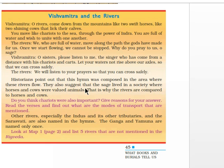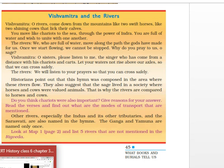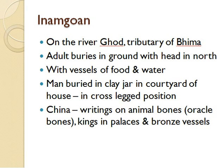This also suggests that the sages lived in a society where horses and cows were valued animals — that is why the rivers are compared to horses and cows. These are some of the themes mentioned in the Rig Veda.